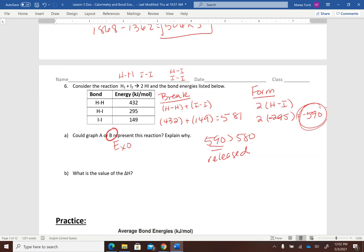When we add these two numbers together, 581 minus 590, we get a difference of just negative 9 kilojoules.